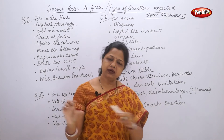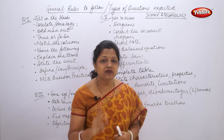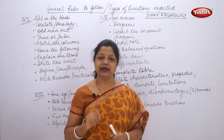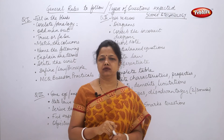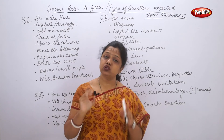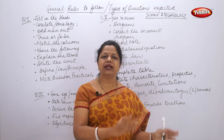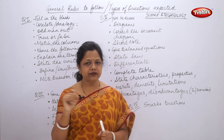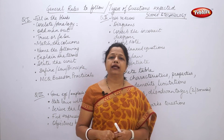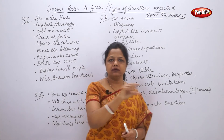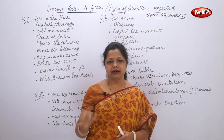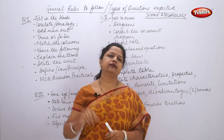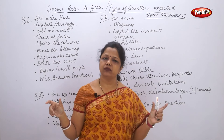For balanced equations — when you are given an equation to balance, first always try to balance it with a pencil using the hit-and-trial method. When you are sure the balancing is correct, then convert it with pen by overwriting. Under the equation, write the name of the reactants and the name of the products.